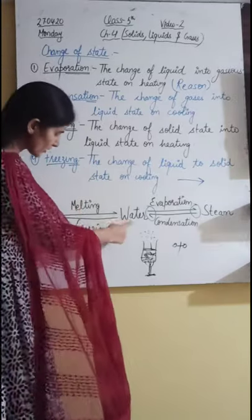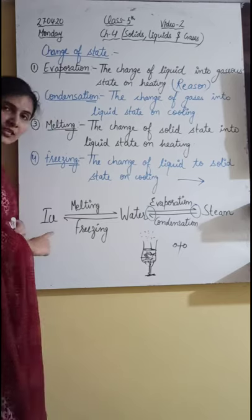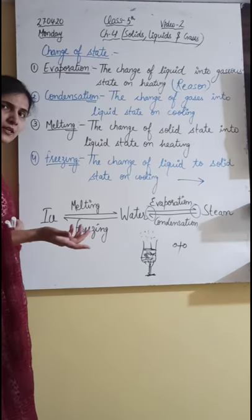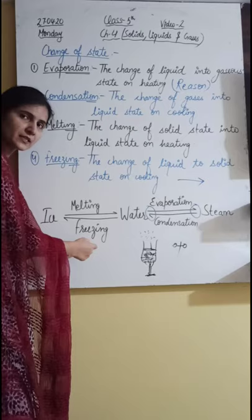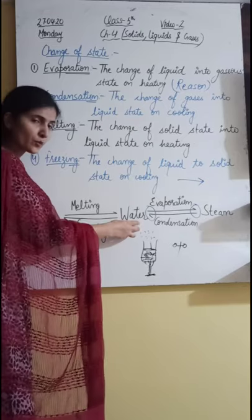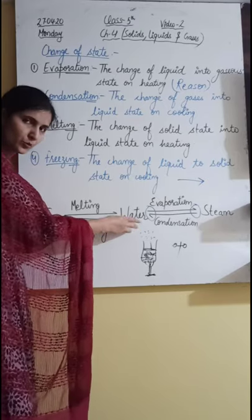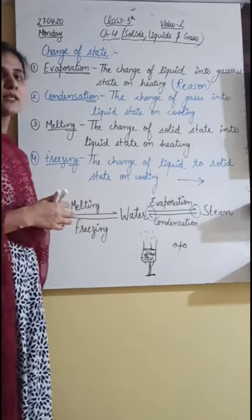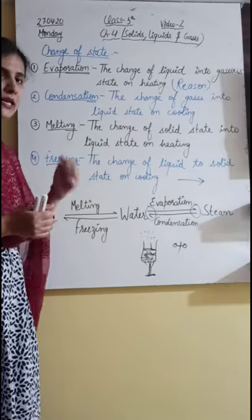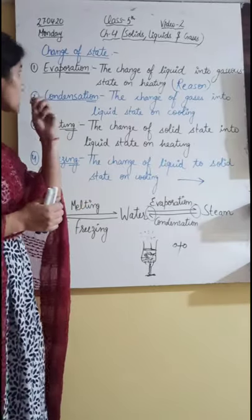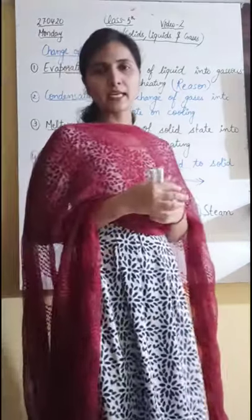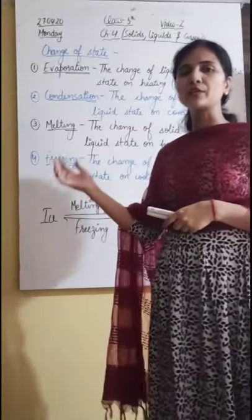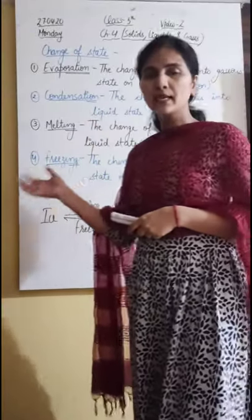This water can again change into ice when we keep it in the freezer — this process is known as freezing, because the water molecules get cooled and change into ice. So this is the change of state, and these are the four processes: melting, evaporation, condensation, and freezing.